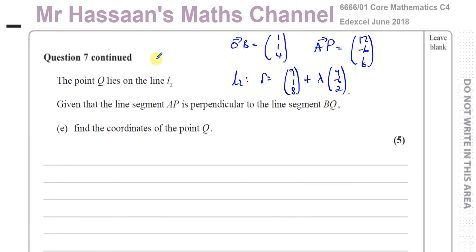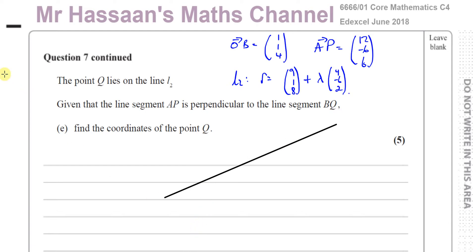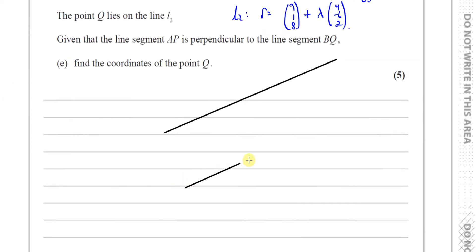Here we're told that the point Q lies on the line L2. Given that the line segment AP is perpendicular to the line segment BQ, find the coordinates of the point Q. We're already told in the earlier part of the question that you have line 1 and line 2, which is parallel to line 1. And we have points A and B on line 1, and a point P on line 2.